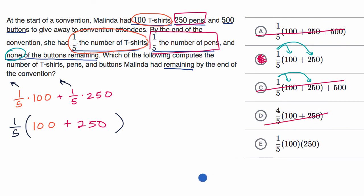Now this is doing one-fifth times the original number of T-shirts, but then for some reason they're multiplying that times the number of pens. And so that one just mathematically is not what they're describing there. So we could rule that one out as well.